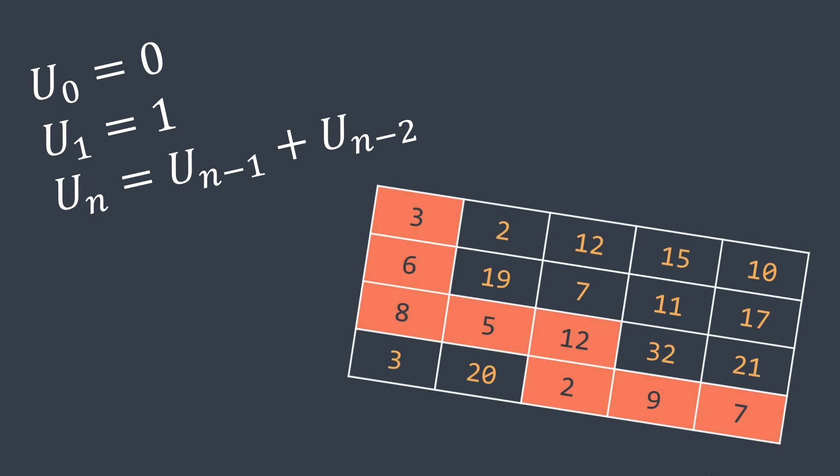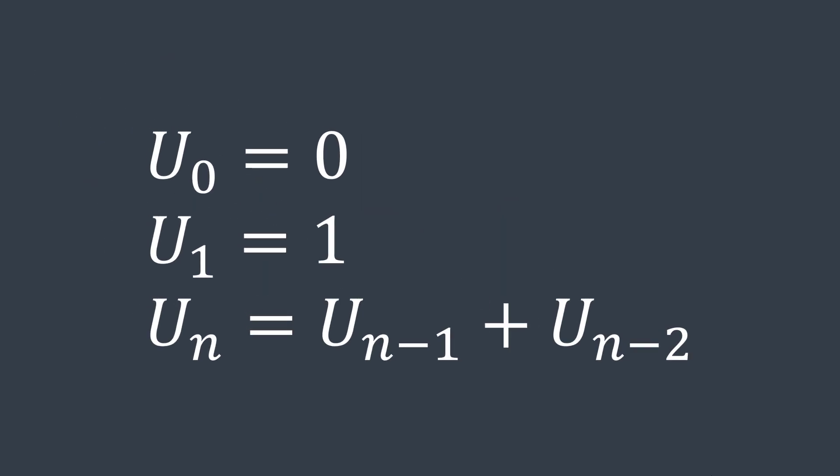Let's start with the first one. We have the mathematical definition of the Fibonacci sequence, and we want to calculate the value of the term n. We know that fib(0) is 0, fib(1) is 1, and fib(n) is the sum of its two previous terms: fib(n-1) and fib(n-2).